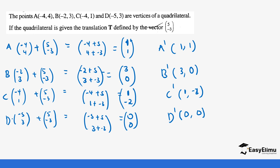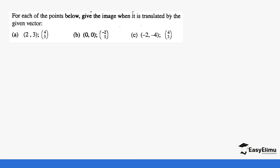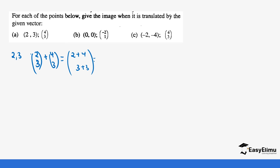Later in another lesson we'll discuss how to draw this image on a Cartesian plane. Now let's do a few interactive questions. For each of the points below, give the image when translated by the given vector. Point (2, 3) with translation vector (4, 3): we add them — 2 plus 4 is 6, 3 plus 3 is 6. So the new image coordinate is (6, 6).